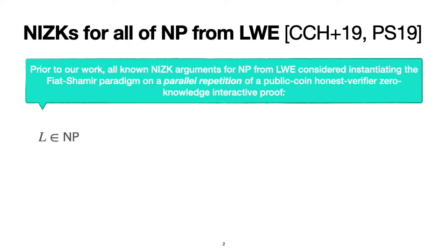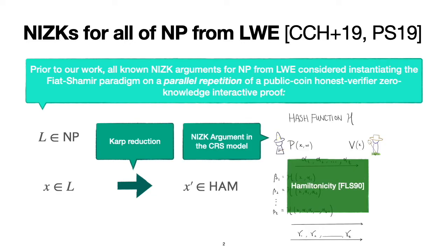If we have a language L in NP, we can take a statement x in L, compile it via Karp reduction to some instance in an NP-complete language such as graph Hamiltonicity, for which CCH+19 and PS19 give us a NIZK argument in the CRS model based on the hardness of LWE.